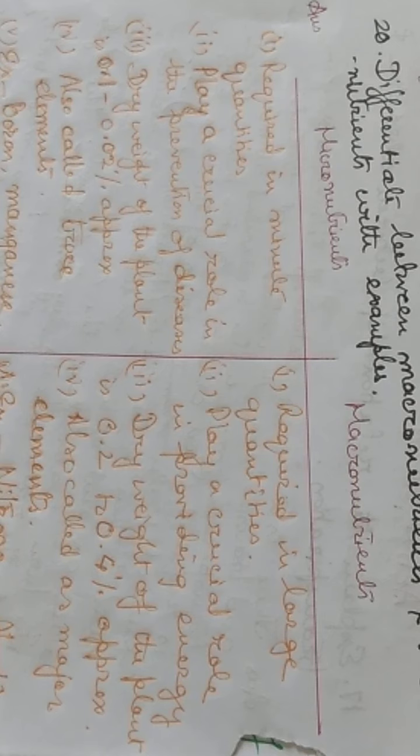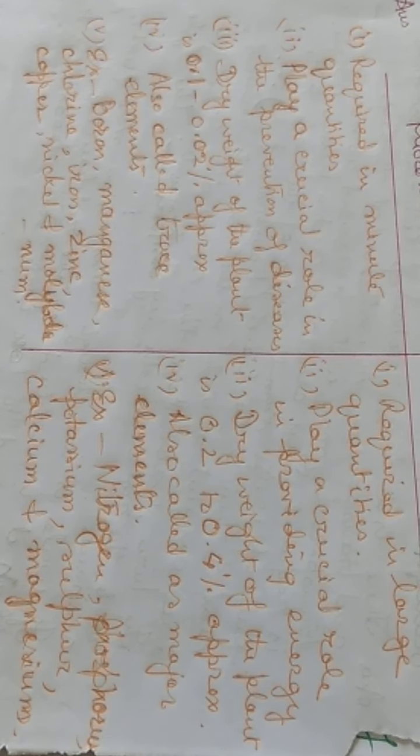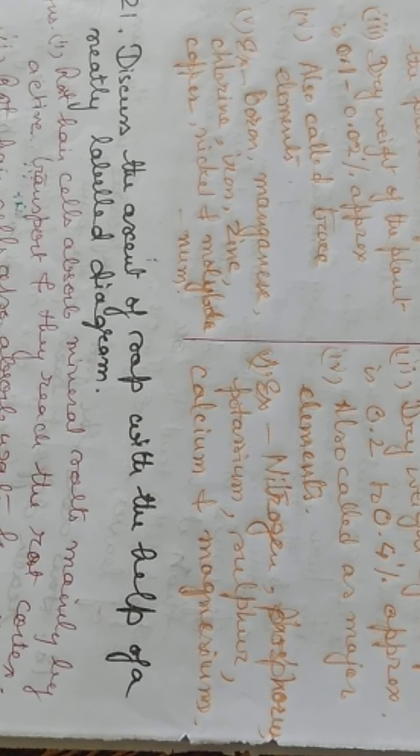What is the difference between macronutrients and micronutrients? Micronutrients are required in minute quantities, whereas macronutrients are required in large quantities. Micronutrients play a crucial role in the prevention of diseases; macronutrients play a crucial role in providing energy. The dry weight of micronutrients in a plant is approximately 0.01–0.02%, whereas macronutrients are approximately 0.2–0.4% dry weight. Micronutrients are called trace elements and macronutrients are called major elements. Examples of micronutrients: boron, manganese, chlorine, iron, zinc, copper, nickel, and molybdenum. Examples of macronutrients: nitrogen, phosphorus, potassium, sulfate, calcium, and magnesium.